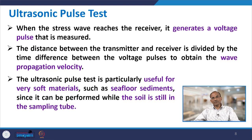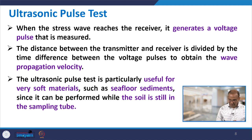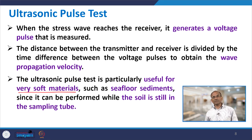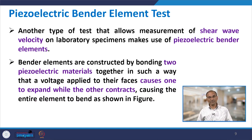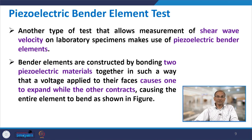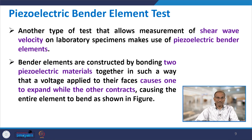The ultrasonic pulse test is particularly useful for very soft materials. For example, it can be performed on sea floor sediments while the soil is still in the sampling tube, without removing the sample. The third low strain laboratory test is the piezoelectric bender element test, following RCA (first) and ultrasonic pulse test (second).